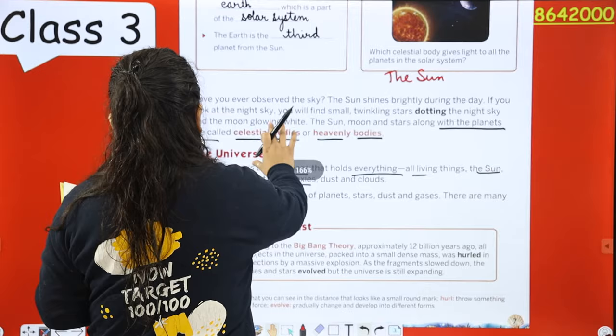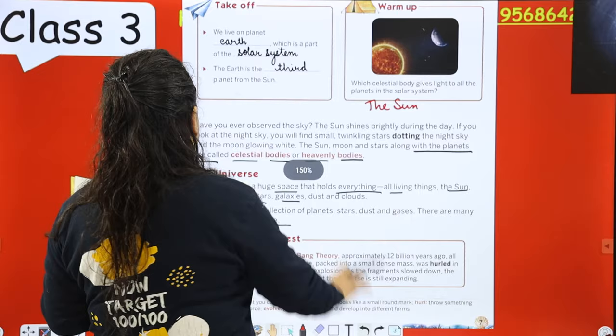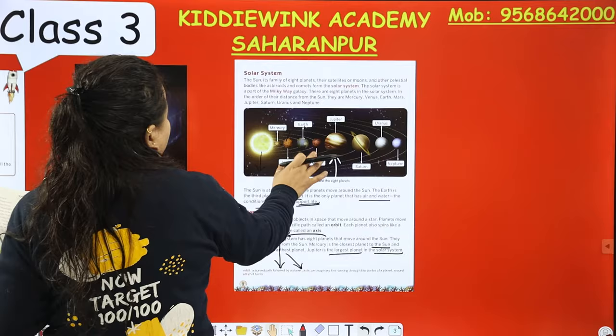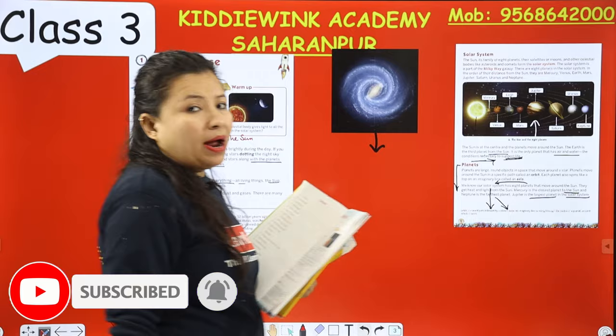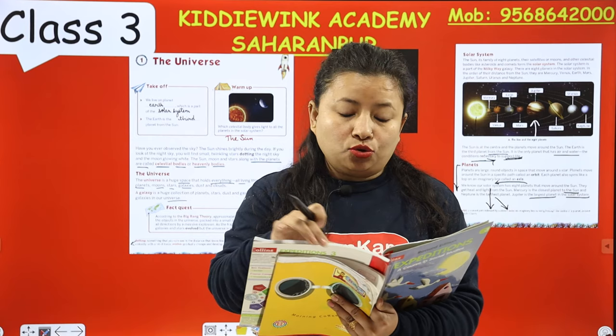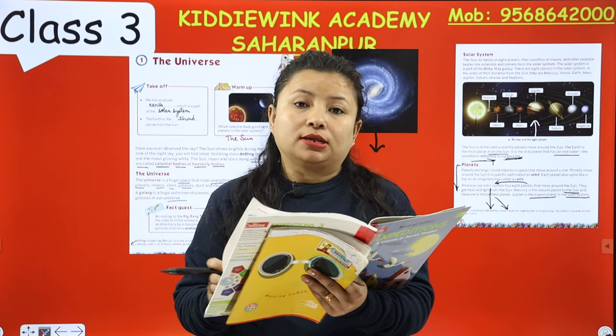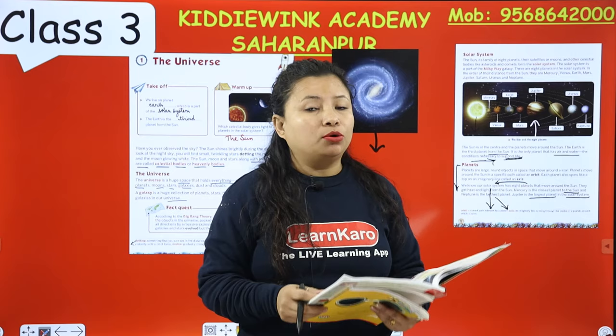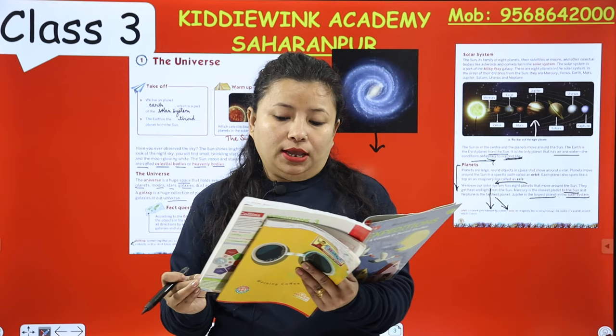That's all for today. Today we have covered these important topics: the universe, galaxy, solar system and planets. The rest of the part we will complete in the next class, where we will learn about stars, constellations, satellites, the moon, comets and asteroids. Till then, goodbye! I hope you enjoyed the chapter today. You have to read the chapter again at home. Take care, bye!